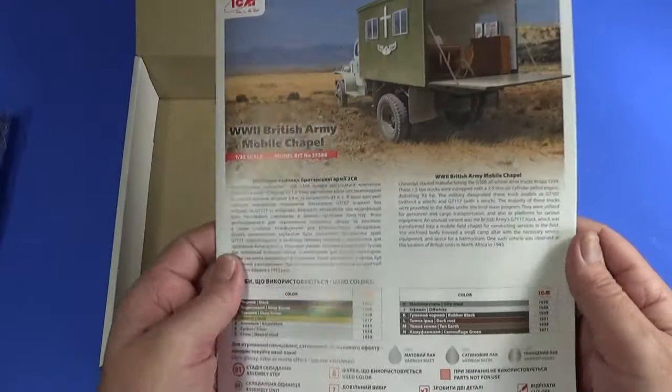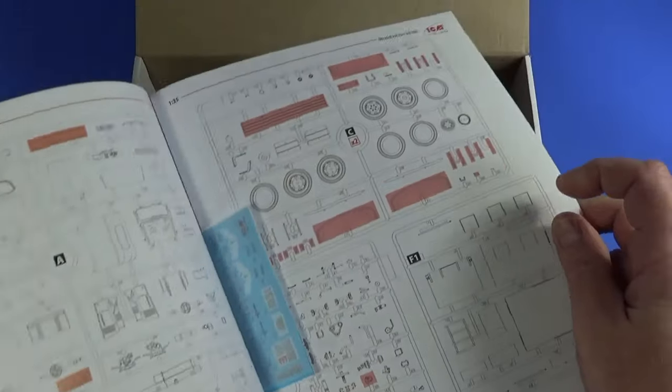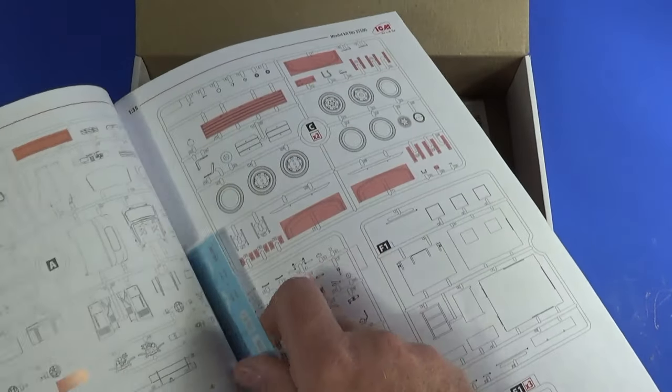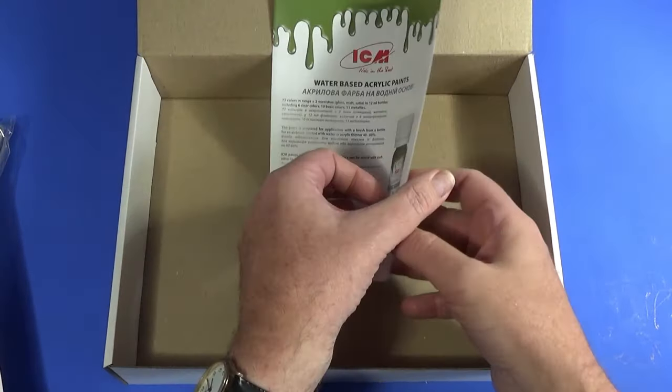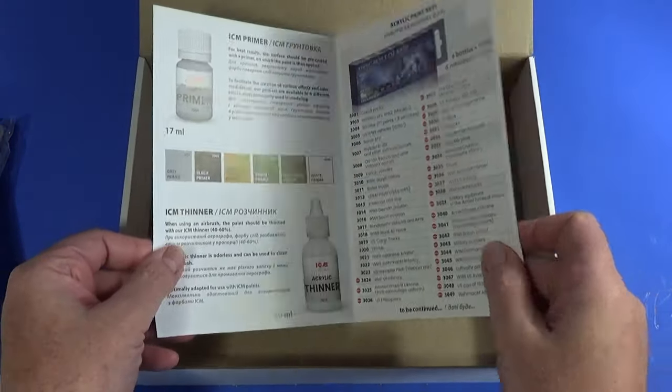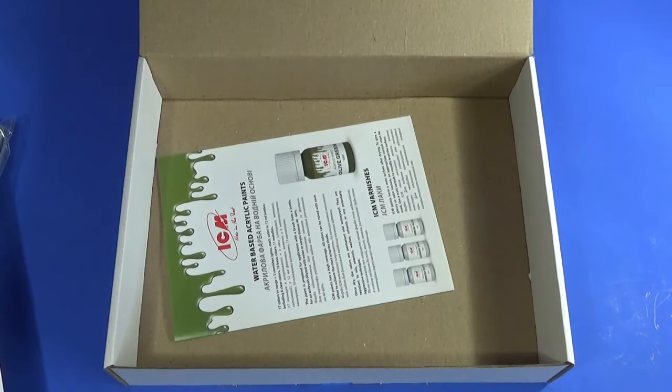So that's the instruction sheet. Inside is the decal sheet, and then as usual with ICM, there's a piece of information about their paint range as well. Let's have a look at the component parts in a bit more detail.